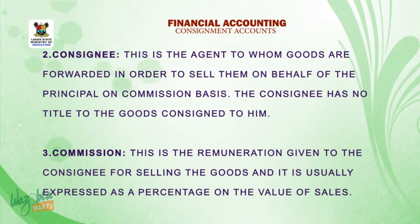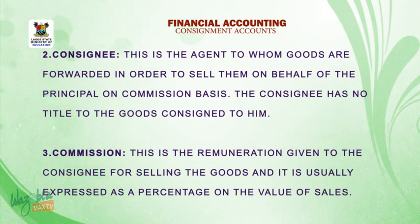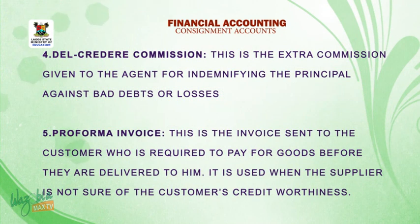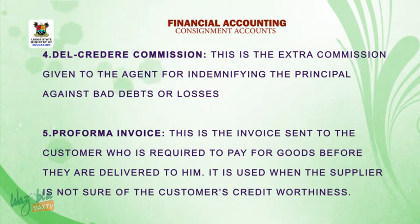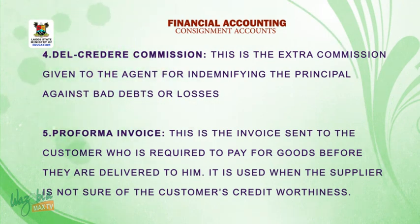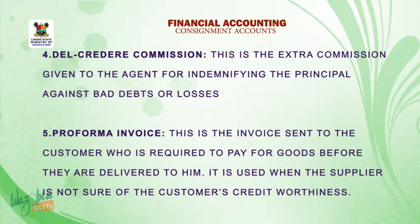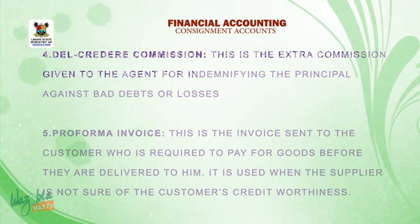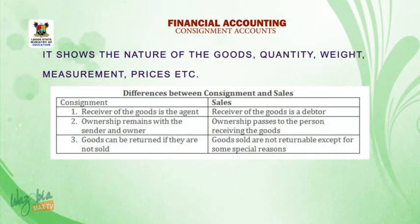Three, commission — this is the remuneration given to the consignee for selling the goods, and it is usually expressed as a percentage on the value of sales. Four, del credere commission — this is the extra commission given to the agent for indemnifying the principal against bad debts or losses. Five, proforma invoice — this is the invoice sent to the customer who is required to pay for goods before they are delivered. It is used when the supplier is not sure of the customer's credit worthiness and shows the nature of the goods, quantity, weight, measurement, prices, etc.